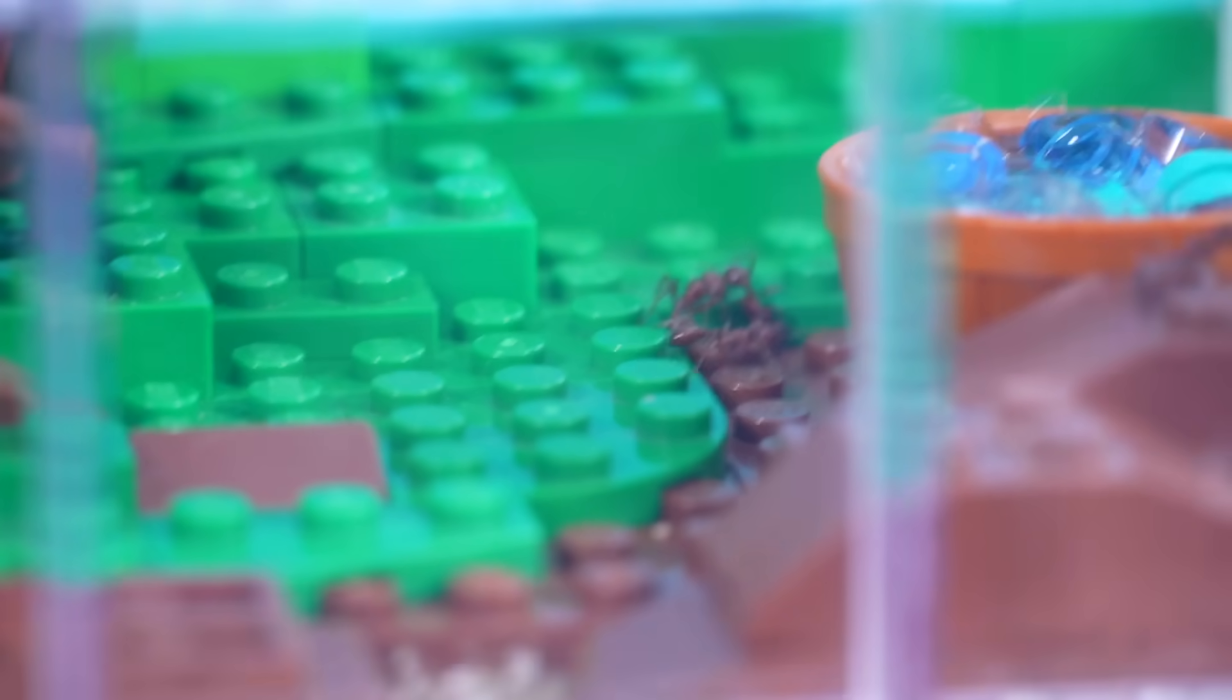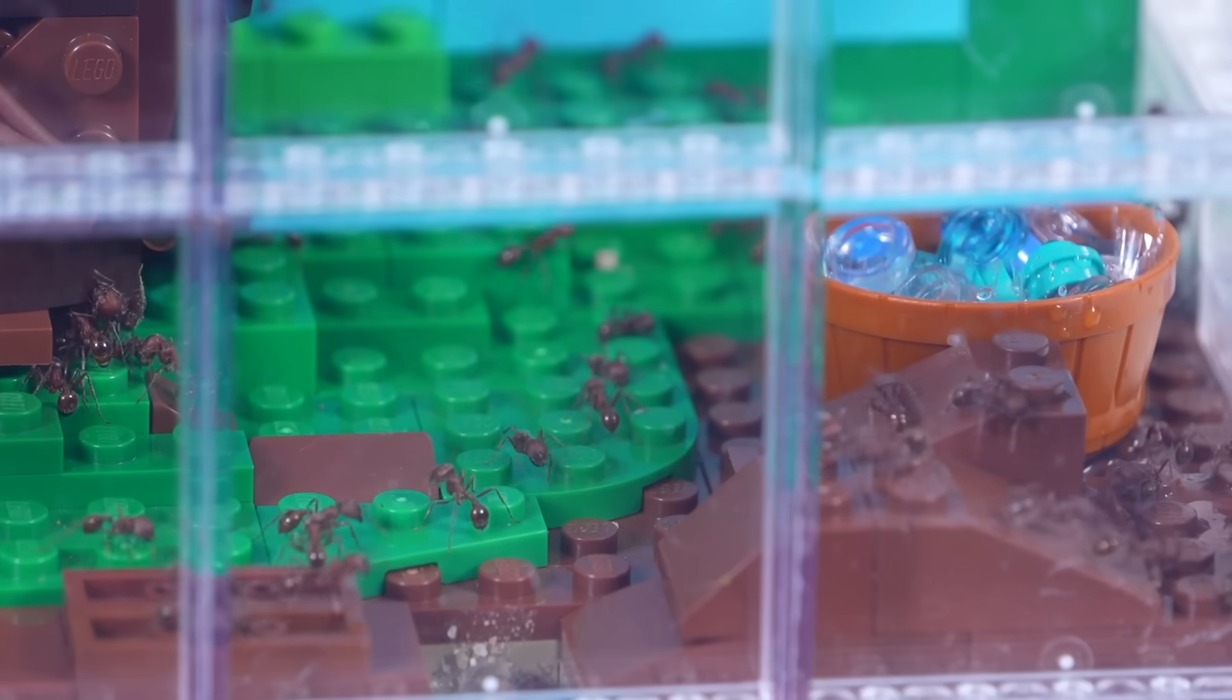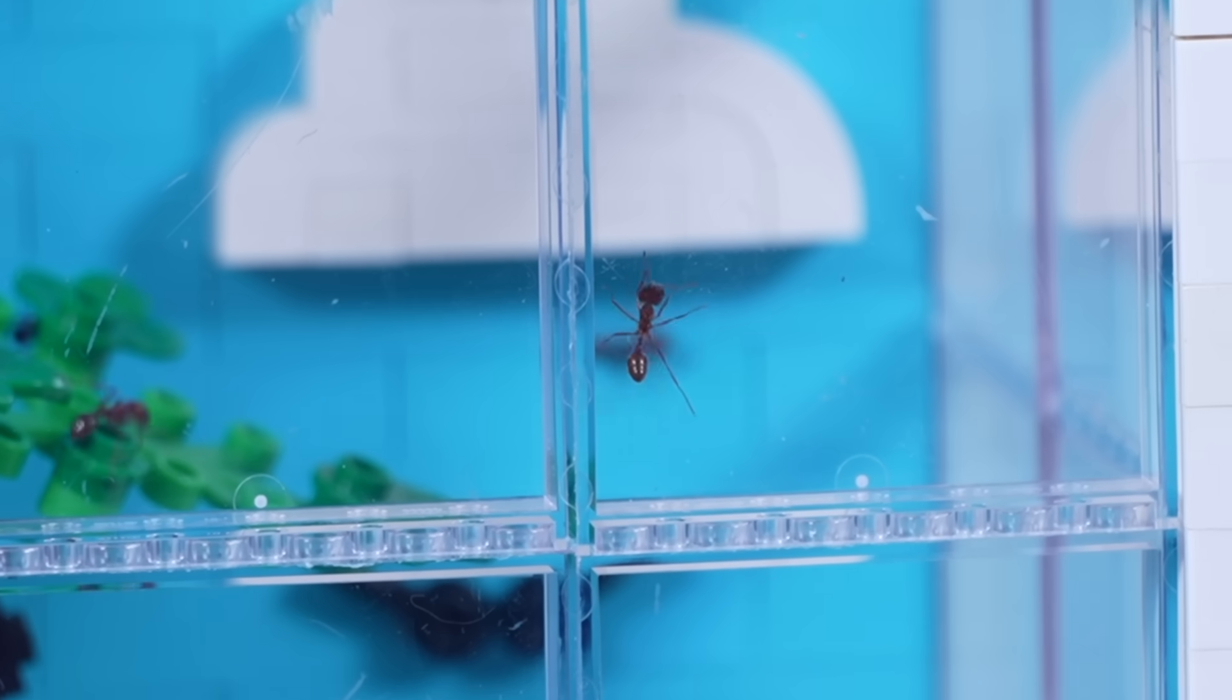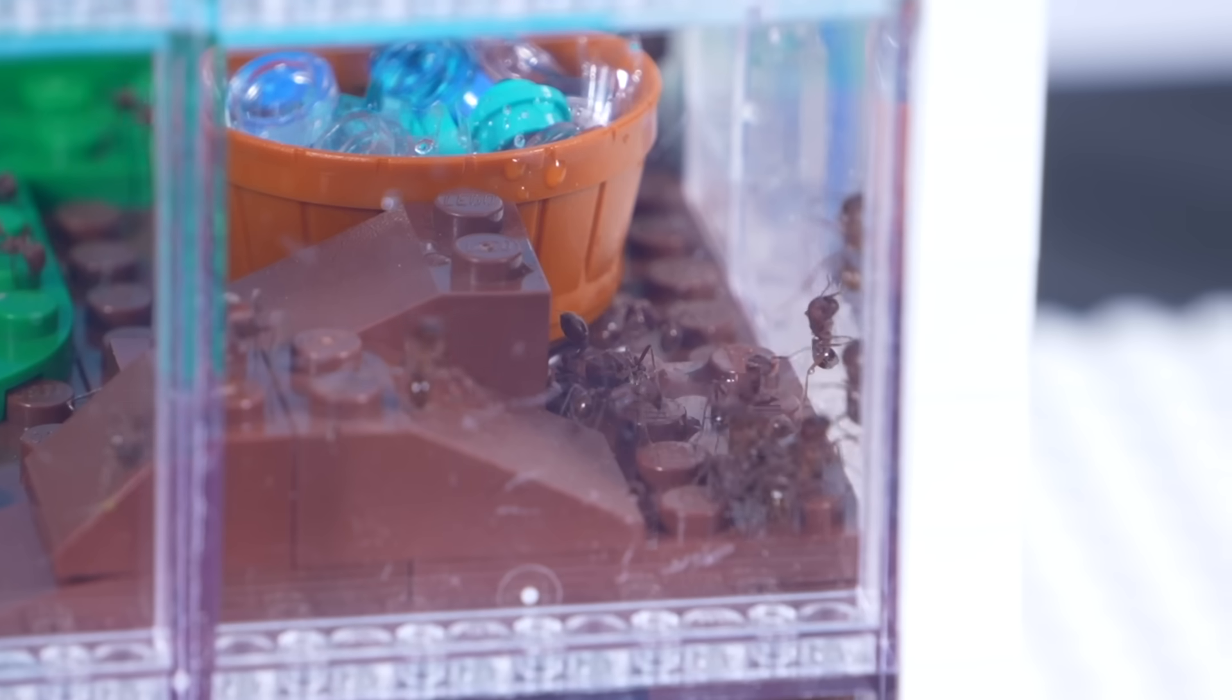It took the ants a while to get comfortable in their new space. But after a few hours, they seemed to settle in and got started exploring. And that's one thing I noticed about the ants, is that they were constantly looking for a way out. When in reality, all they had to do was tunnel down into the gel pond to reach the next level. They pretty much all settled into the nest I built them. There have been a couple that have tried to escape and two that succeeded.